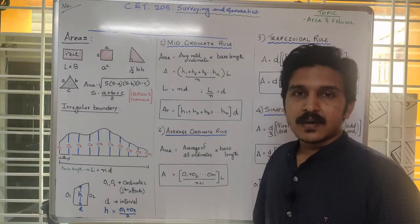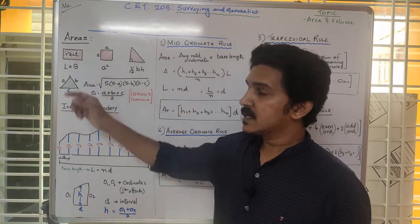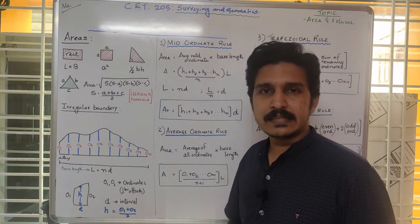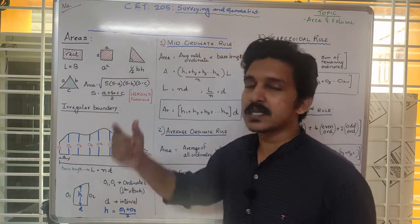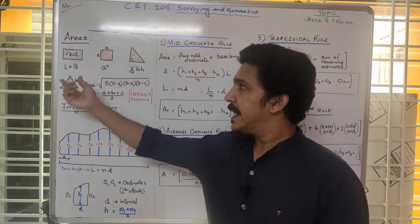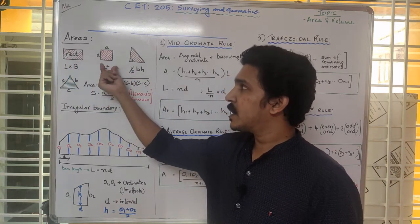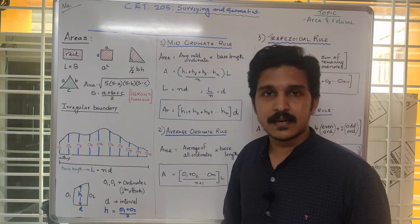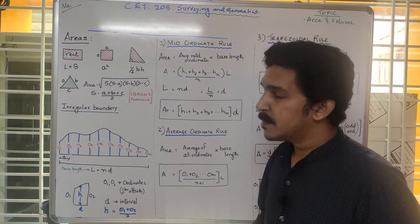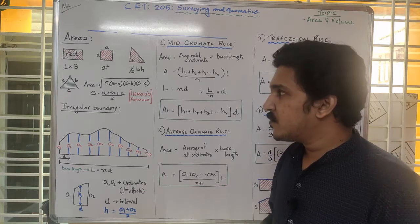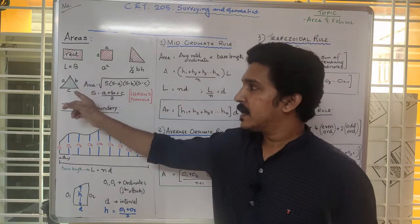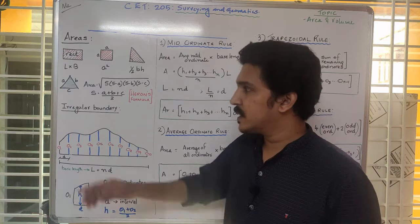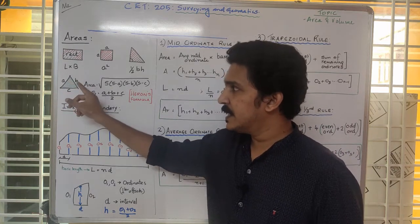Finding the areas of regular figures such as a square, a rectangle, or a right triangle is very easy because there are specific formulas. L into B for a rectangle, A squared for a square of side A, and half BH for a right triangle of base B. So what if we have to find out the area of a triangle which is not a right triangle, but we know all the different sides A, B, and C?